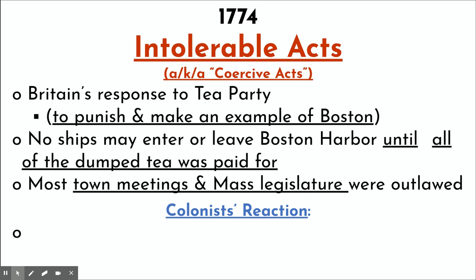But it didn't work — it backfired. Another major part of the Intolerable Acts was that no ships could enter or leave Boston Harbor. Since Boston is in New England with a short growing season and rocky soil, they relied on fishing, trade, shipbuilding, and whaling. No ships could enter or leave until all the dumped tea was paid for and the tax on it was paid. Many people felt this was going to be the death of Boston.